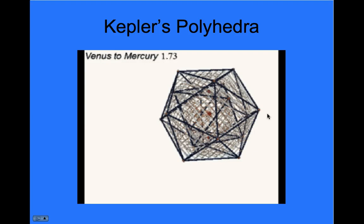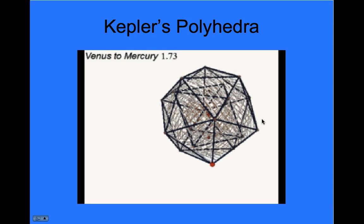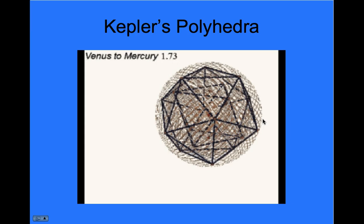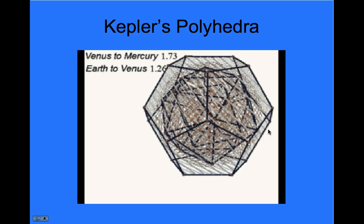Around Venus's sphere, we put an icosahedron, and around that icosahedron, we put another sphere, and it turns out the ratio of the radii of those spheres is 1.26, which is fairly close.